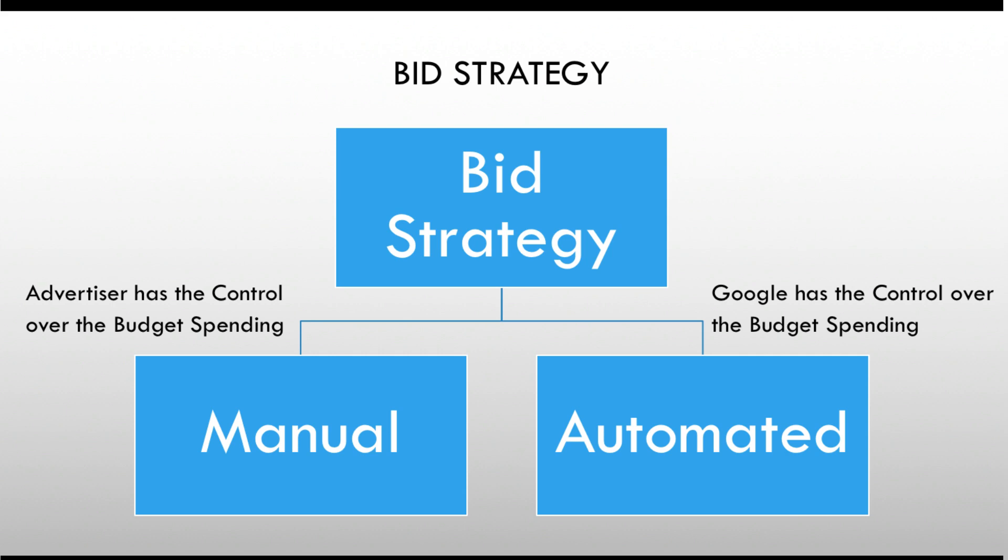I have introduced you to the concept of bid strategies in the previous videos, but allow me to shed some more light on it. There are mainly two types of bid strategies: one is the manual bid strategy and the other one is automated.